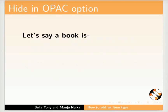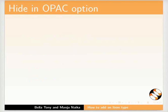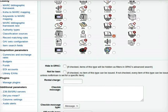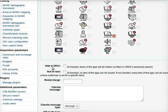Next we will learn how hide in OPAC helps. Let us say a book is damaged or has to be kept back for binding purpose. In such cases the option hide in OPAC will make the book invisible to all the users. As per your requirement check or uncheck the check box for hide in OPAC. I will leave the check box blank.